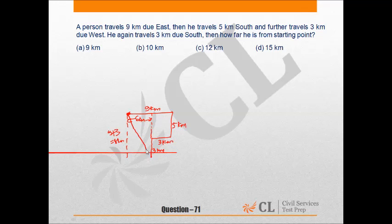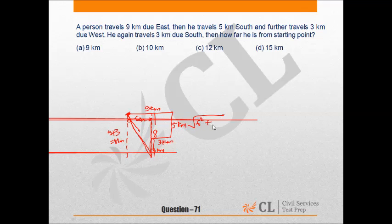So this distance would be — it is 8 and it is 6 — so this distance would be under root 6 square plus 8 square. That is 10 km.